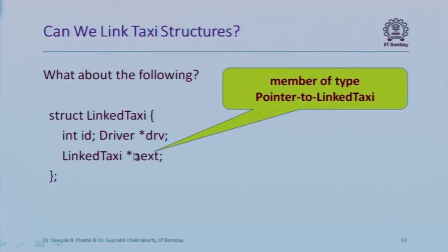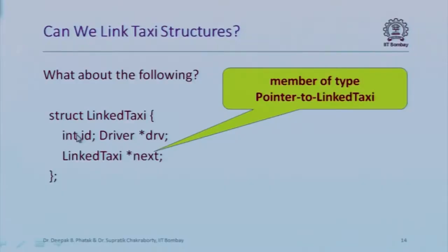The solution is to have a pointer to the next taxi rather than a copy of it. In the link_taxi structure, we keep the ID and driver pointer as before, but make 'next' a pointer of type link_taxi*. A pointer is just an address, always 4 bytes regardless of what it points to. So the total is 4 + 4 + 4 = 12 bytes — unlike the previous case which required infinite storage.